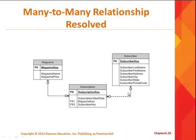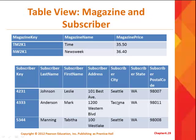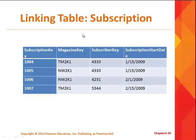You can now see there are two one-to-many relationships. Here's what the data might look like in those tables — a limited amount of data obviously, only two magazines and three subscribers, but imagine this on a larger scale. Here's what the linking table and its data would look like.